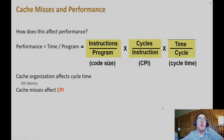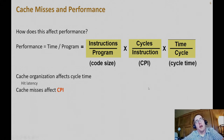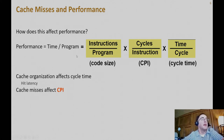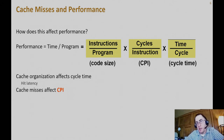Now let's talk about how all of this feeds into processor metrics for performance. Here is our Iron Law: performance is measured in terms of the amount of time it takes for a program, broken down into instruction count, CPI, and clock cycle time. Cache affects the clock cycle time.